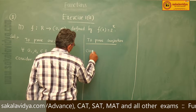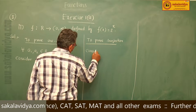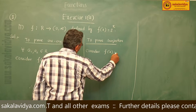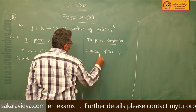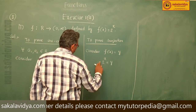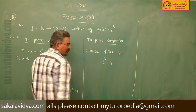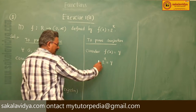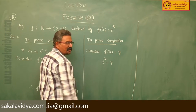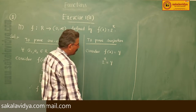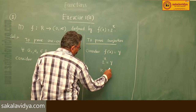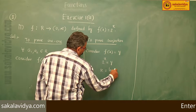Next, to prove surjection. Consider f(x) = y. So 2^x = y — this is the exponential form. The exponential form can be changed into logarithmic form. So x = log y to the base 2.